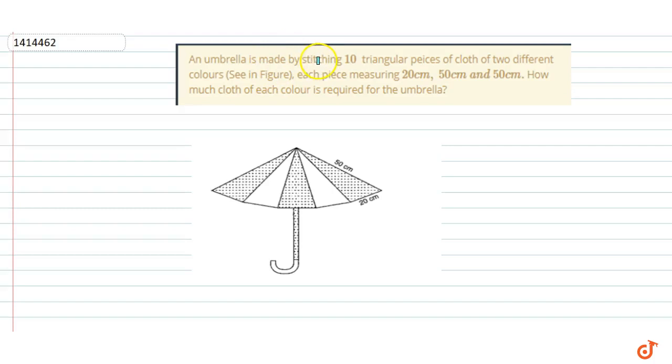The question given is: An umbrella is made by stitching 10 triangular pieces of cloth of two different colors. Each piece measures 20 centimeters, 50 centimeters, and 50 centimeters. How much cloth of each color is required for the umbrella?